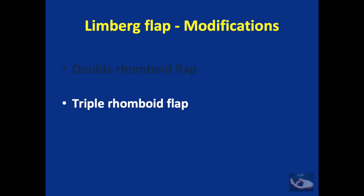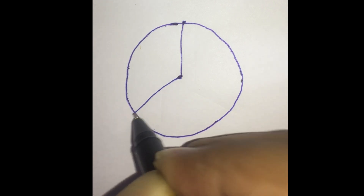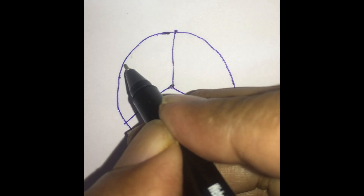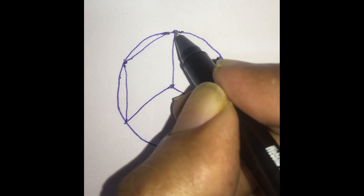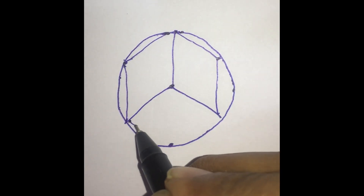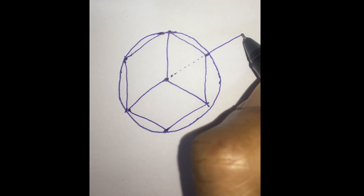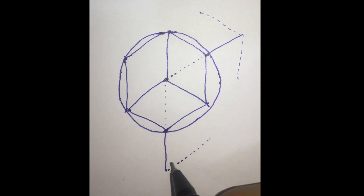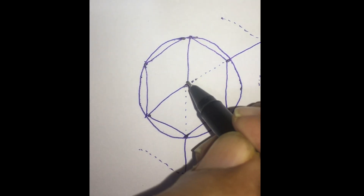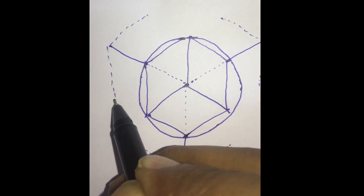We shall now see how a triple rhomboid flap is marked. Here, the defect is made into a circle. Starting with the 12 o'clock position on the circle, a Mercedes Benz-like symbol is marked. This will divide the circle into three segments. The midpoint of each segment is marked on the circumference of the circle and from each of these points, a rhomboid is formed. So we get three rhomboids. Each of these three rhomboids is considered as a single defect. The short diagonal is marked and the flap is marked as we already know, and two Limburg flaps can be planned for each of these rhomboid defects.